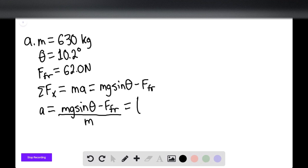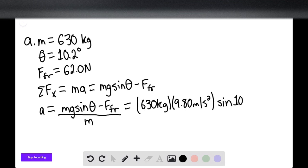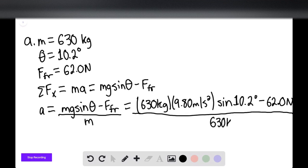So we're simply going to plug in: 630 kilograms multiplied by 9.80 meters per second squared times sine of 10.2 degrees, minus 62.0 newtons. This would all be divided by mass, 630 kilograms. And we find that the acceleration is actually positive, 1.64 meters per second squared.